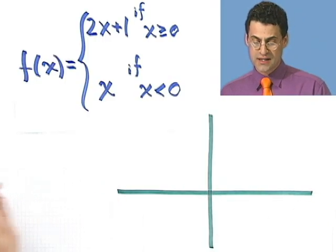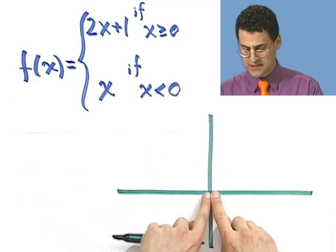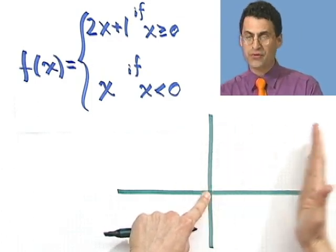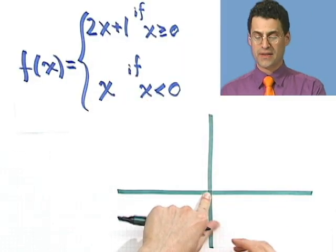And so the first thing I notice is that if x is bigger than or equal to zero, now what region is that? Well x equals zero is here and bigger than zero is here. So it's this region, it's this half of the world. This half of the world, I want to graph that. So let's graph that.